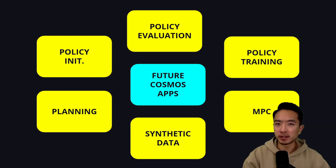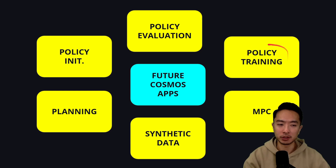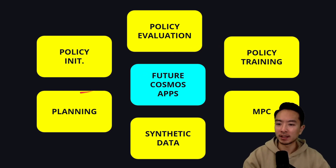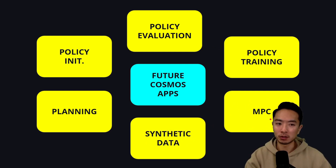There's a lot of future potential for Cosmos. Applications include policy initialization, policy evaluation, and policy training — all related to reinforcement learning — as well as imitation learning, planning, synthetic data generation, and MPC (model predictive control). These are great applications for robotics and autonomous vehicles.